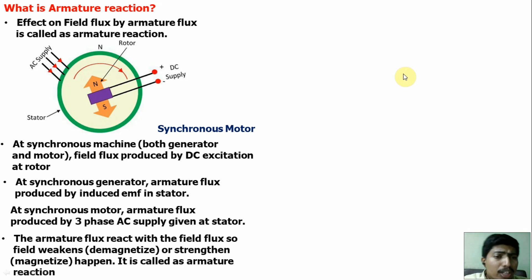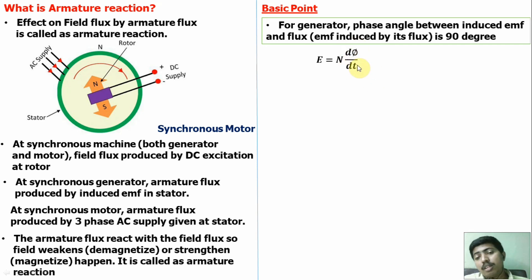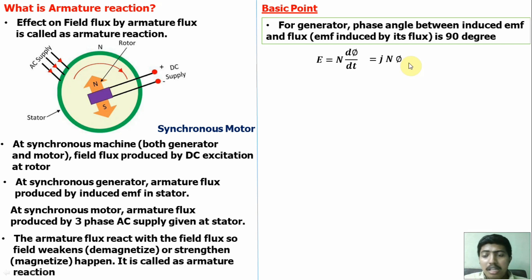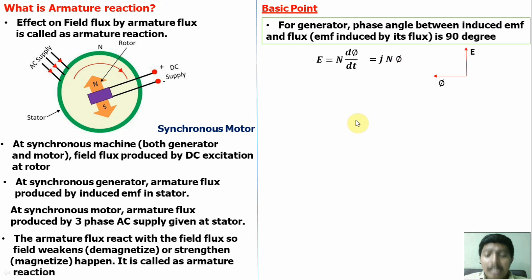Before discussing the effects of armature reaction, we need some basic points. For a generator, the phase angle between the induced EMF and flux is 90 degrees. We know that E = N · dΦ/dt. Applying the Laplace transform, dΦ/dt becomes s·Φ, and at s = jω, this gives j·NΦ. Since j means 90 degrees, the phase angle between the induced EMF and flux is 90 degrees.